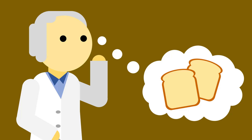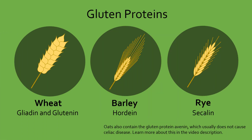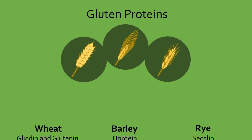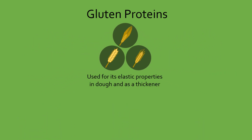But what's gluten? Gluten is a group of proteins found in wheat, barley, and rye. For example, in wheat, the gluten proteins are gliadin and glutenin. Derived from the Latin word for glue, gluten is responsible for making dough elastic and sometimes used as a thickener.